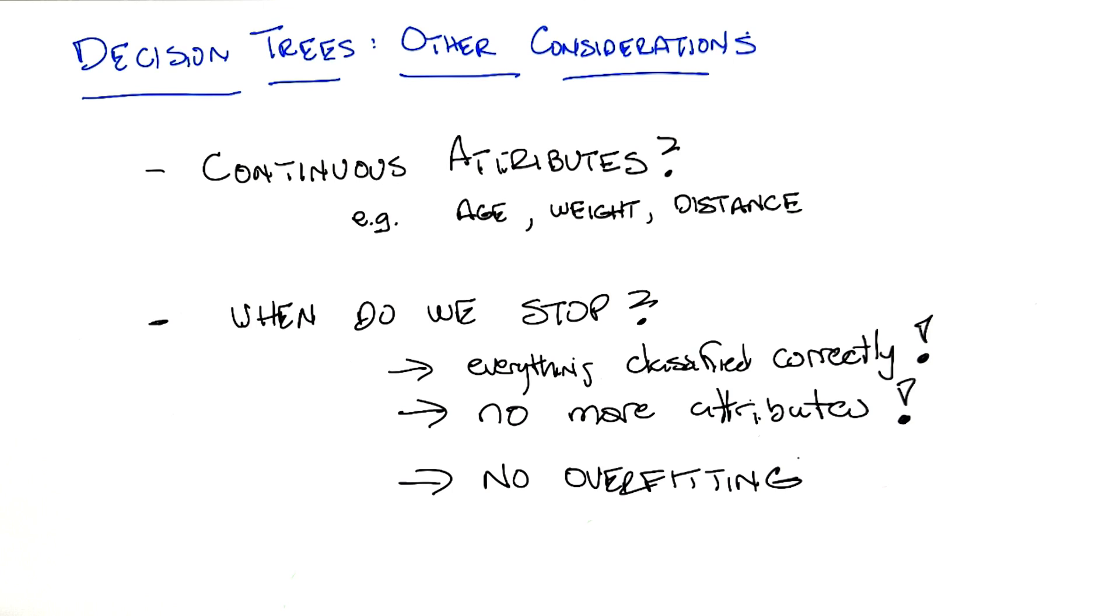So, we don't want to overfit. So, we need to come up with some way of avoiding overfitting. Now, the way you overfit in a decision tree is basically by having a tree that's too big. It's too complicated. Right? Violates Occam's razor.